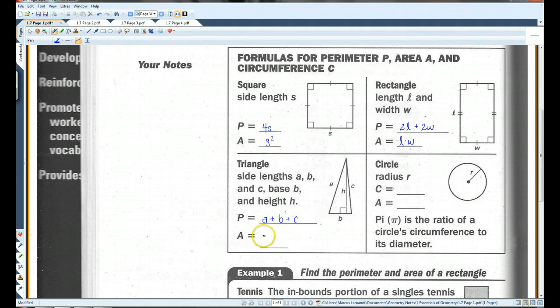The area, however, is going to be 1 half base times height. The base is going to be the bottom, and the height is going to be from the peak, making a right angle with the base. We'll do some examples of this. Alright, for a circle, the circumference, which is basically the perimeter of a circle, is going to be 2 pi r. R is the radius, which is the distance from the center to the side. The area is pi r squared.